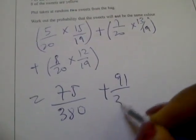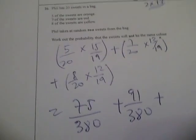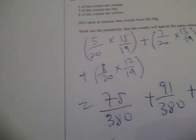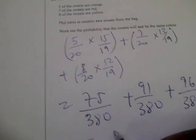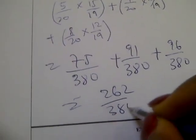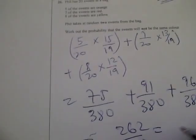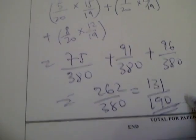Plus 12 times 8 is 96 over 380, which will give you 262 over 380, which is 131 over 190. And that's the final answer.